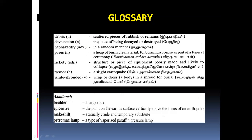Makeshift is a usually crude and temporary substitute — an alternate. Petromax lamp — a type of vaporized paraffin pressure lamp, the petromax light you know. That is the glossary part.